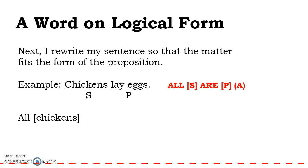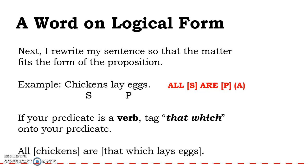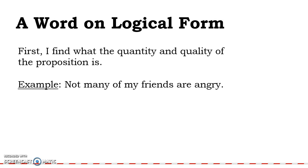'All chickens lay eggs.' All chickens — that works out pretty well — but 'are lay eggs'? We have a problem. This is what I was talking about: sometimes when we put things in logical form, we have to do some tidying up. How do we turn this predicate into a predicate term that works in logical form? Since I have a verb in the predicate, I tag the words 'that which' onto the beginning. The result: 'All chickens are that which lays eggs.' This is good for two reasons: the sentence makes grammatical sense, and I have a term I can work with if I want to add another proposition and create an argument.